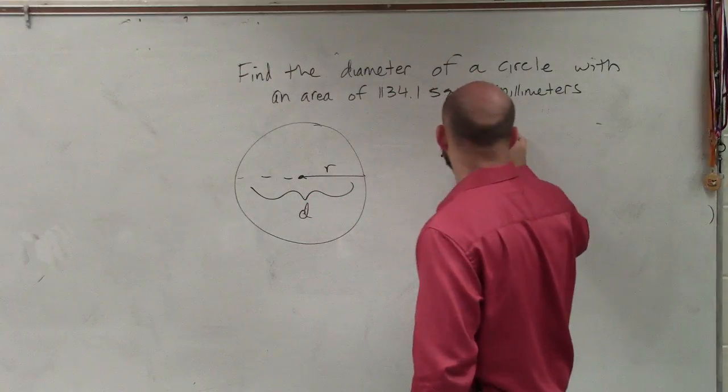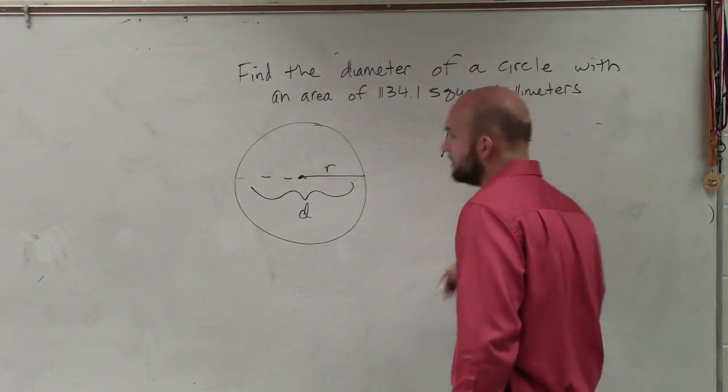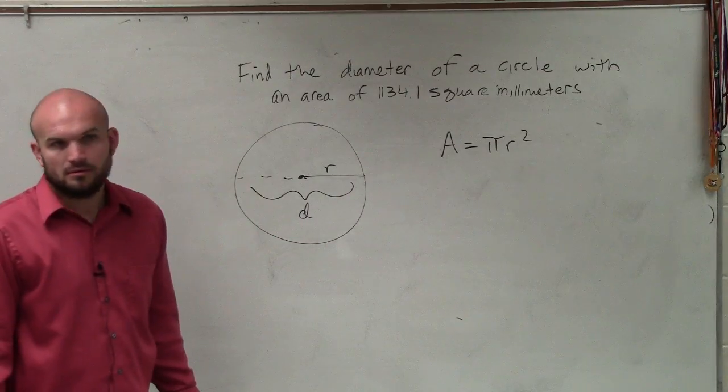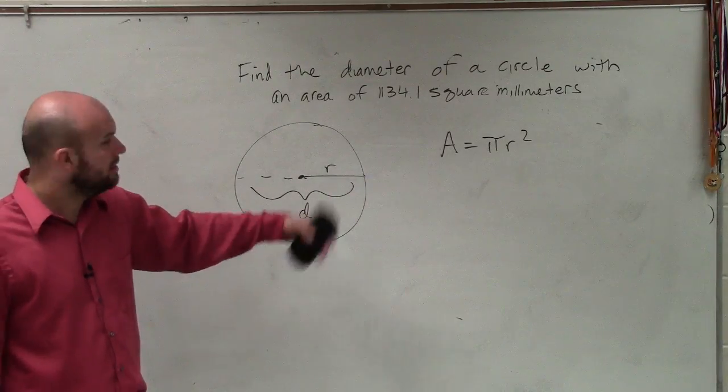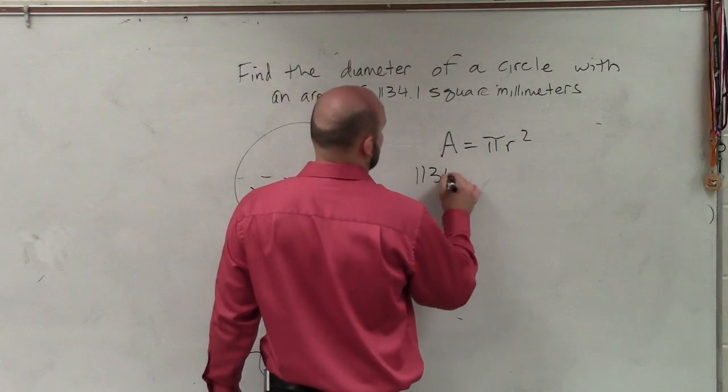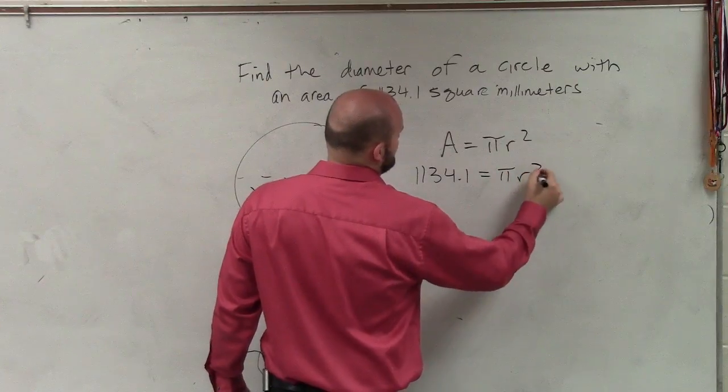Area equals pi r squared, OK? Now, do we know what r is, the radius? No. We're trying to find d. But do they give us the area? 1,034.1 equals pi r squared.